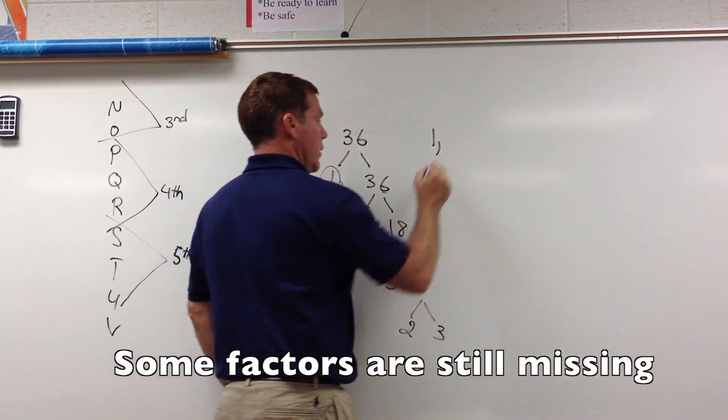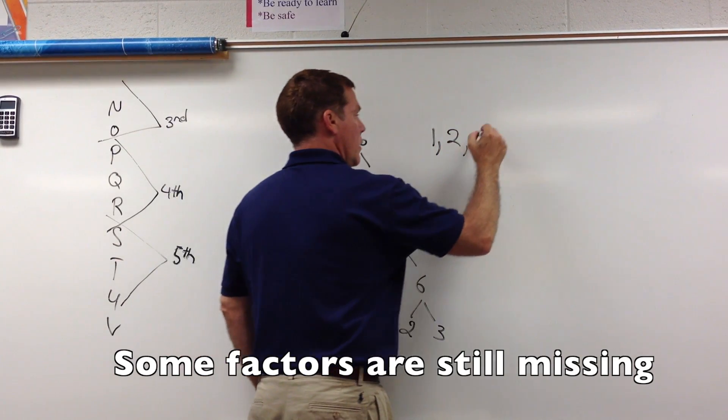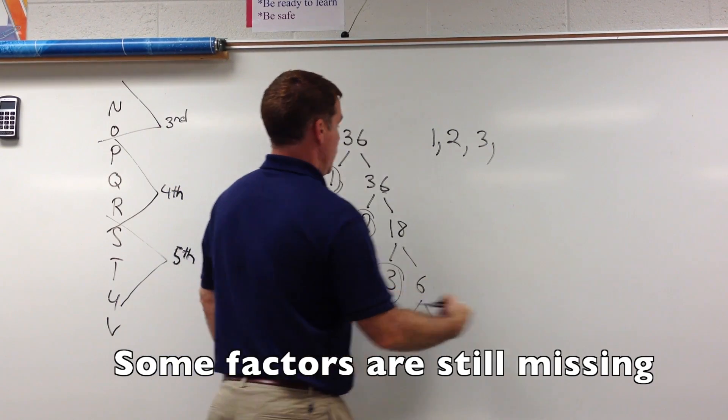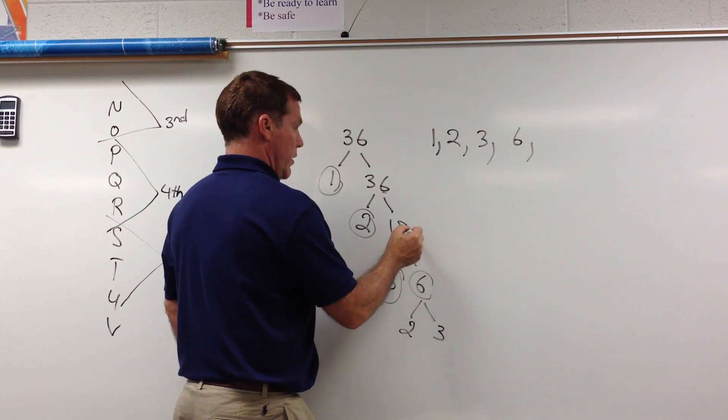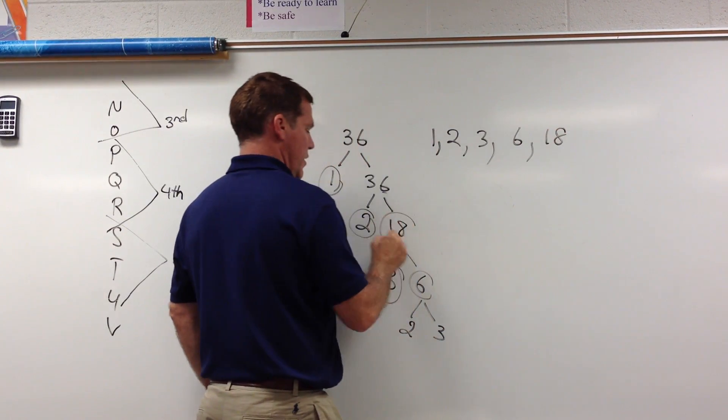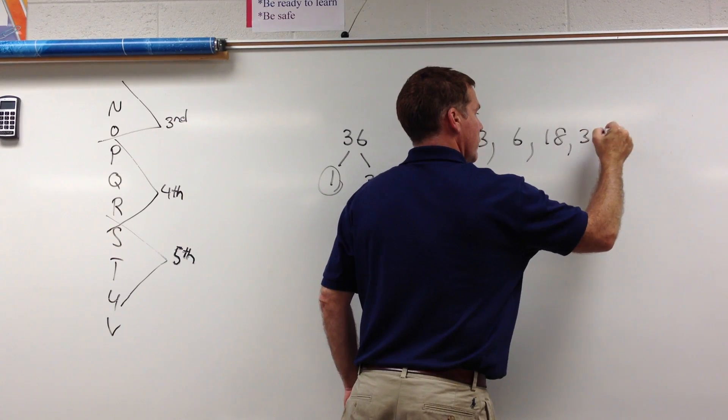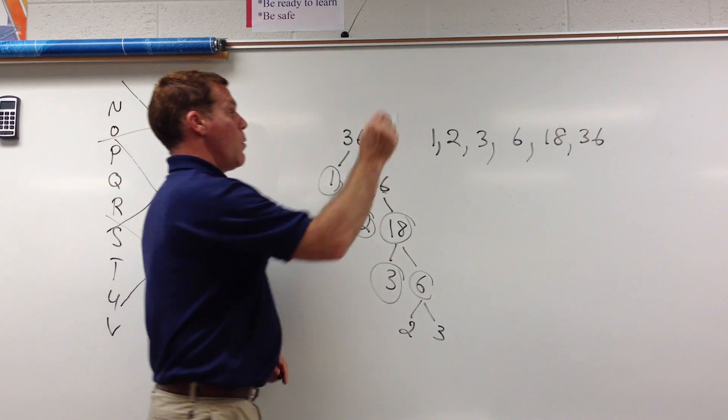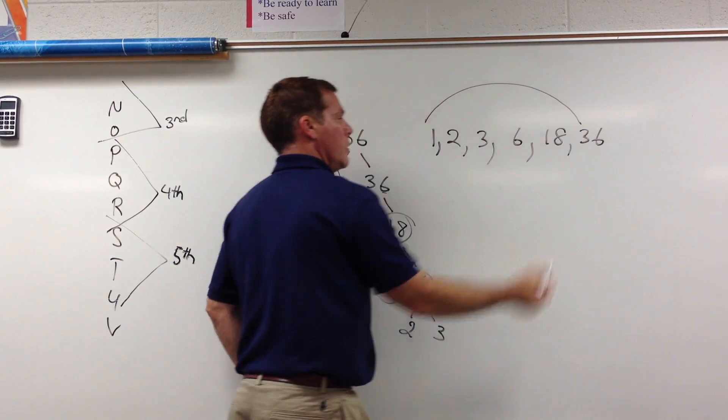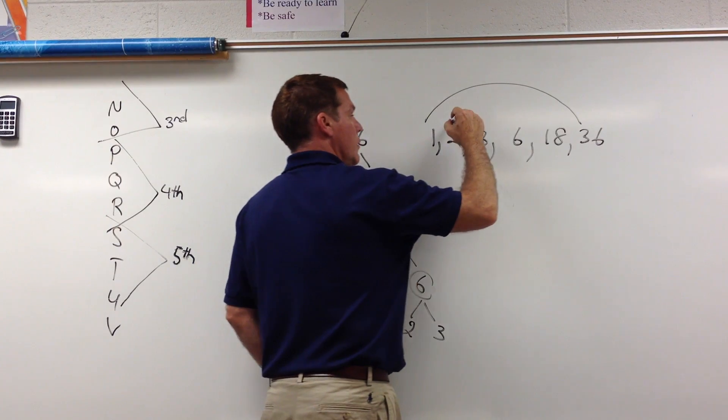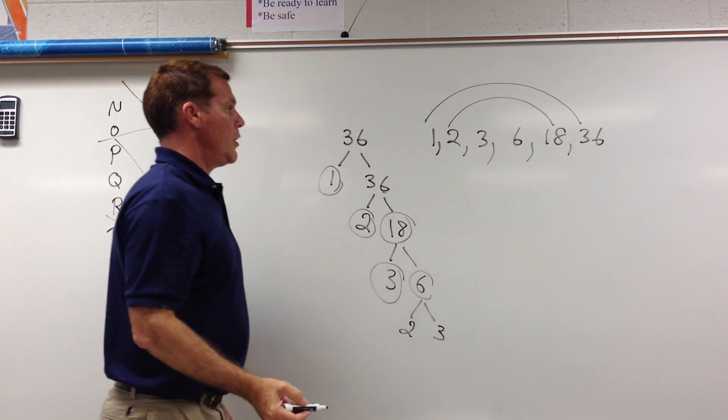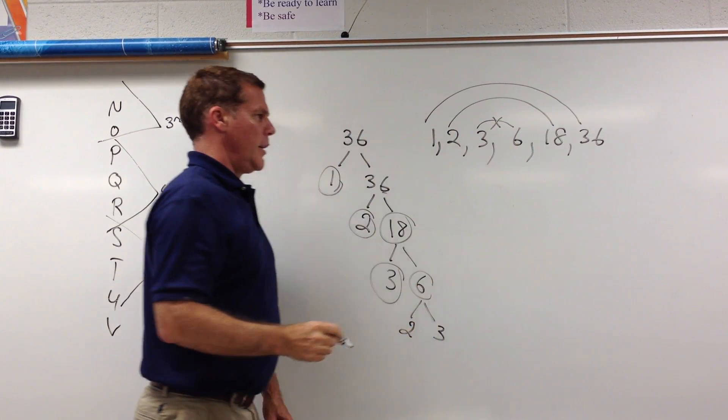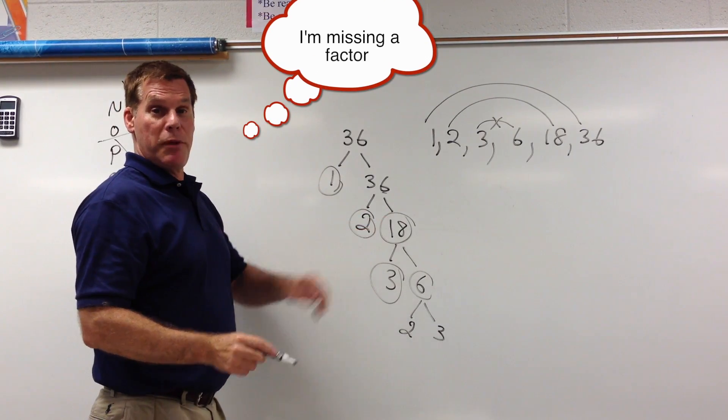If we look at that, I already know because I know my times tables, I know that I don't have all the factors. But let's do the factor tree with what I have so far. I see I have a 1, I have a 2, I have a 3, I already have a 2 and a 3. My next biggest number here I see I have a 6, I have an 18, and I have a 36.